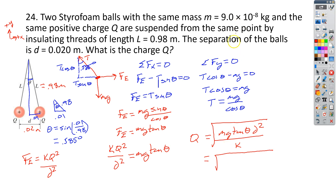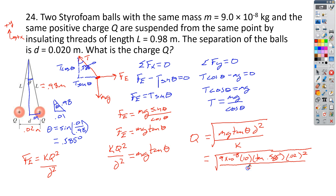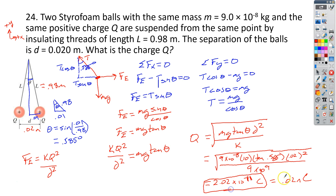Plugging in numbers: mass is 9 times 10 to the negative 8 kilograms, times gravity of 10, times tangent of 0.585 degrees — which is very small — times the distance of 0.02 meters squared, all divided by k which is 9 times 10 to the 9th. When we're done, we get Q equal to 2.02 times 10 to the negative 11th coulombs, which is also equal to 0.02 nanocoulombs. That is the end of the problems for this section.